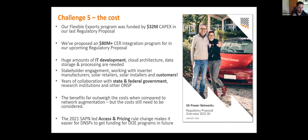The benefits far outweigh the costs. The alternative — building out a bigger network — runs into hundreds of millions, as opposed to 50 to 70 million. We also led the access and pricing rule change in 2021, a change to the National Electricity Rules aimed at simplifying how networks in the future can get funding to build DOE programs at scale.